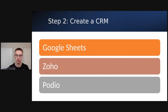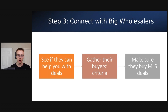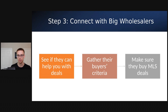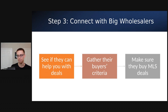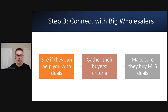Once you've figured out that this is a business for you and you got your CRM put together, you want to start connecting with big wholesalers in your market. The three quickest ways to connect with wholesalers would be through Facebook, through your title company — so call your title company and ask who the biggest wholesalers are in your area and tell them why you're looking to connect — and going into Google and searching terms like 'investment properties for sale' in your target market. Then go onto that wholesaler's website, see how many deals they've sold, and if it's a lot, call them and introduce yourself.